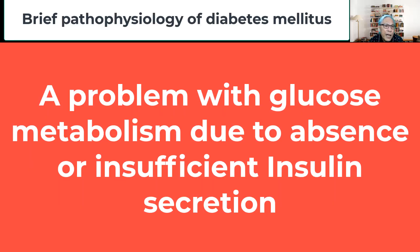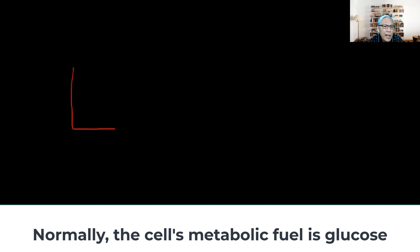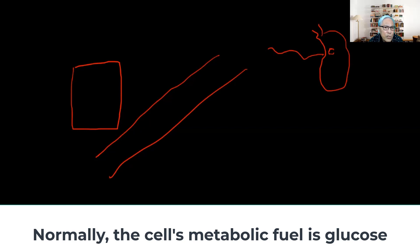What is the problem in diabetes? In diabetes, there is a problem with glucose metabolism as a result of an insufficiency, lack of, or absence of insulin. Cells rely on a metabolic fuel, and that metabolic fuel is glucose. When we eat, the carbohydrates we eat transform into glucose, which is rapidly absorbed into the bloodstream and becomes available for the cells to be utilized as fuel.